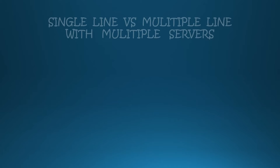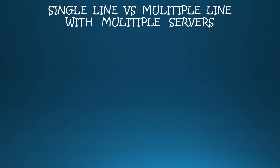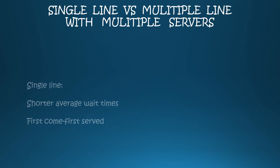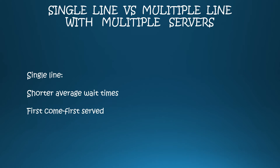The two most popular models are either a single line with multiple servers or multiple lines with multiple servers. A single line with multiple servers has shorter average wait times, promotes fairness on a first-come, first-served basis, reduces the stress on a customer to choose a line, and reduces customers jockeying between lines to try and be in the most efficient one.